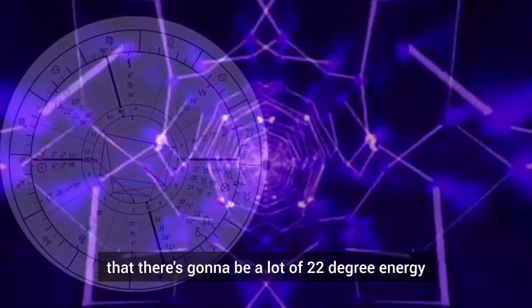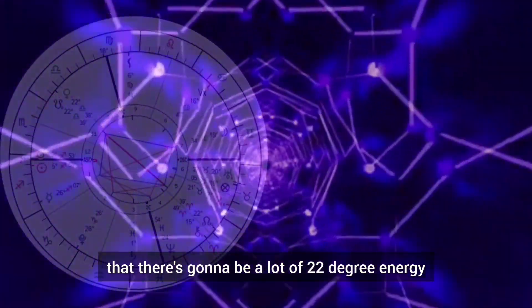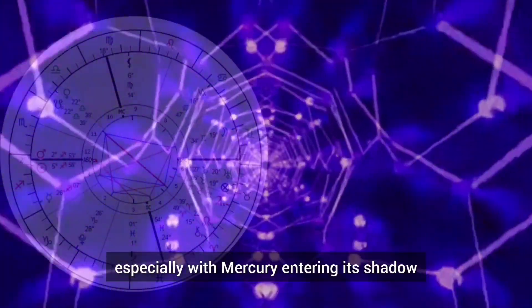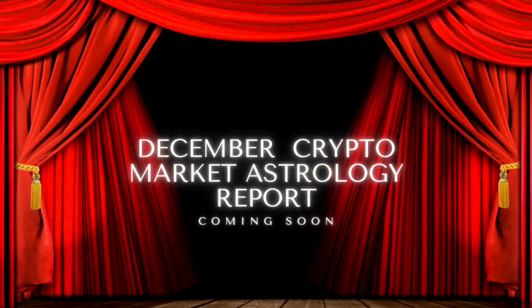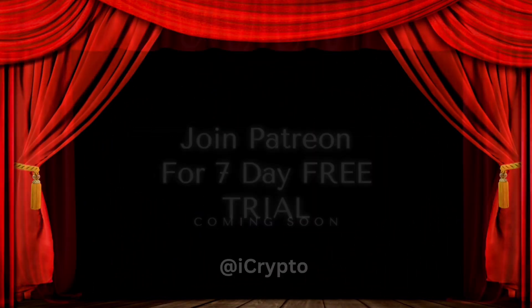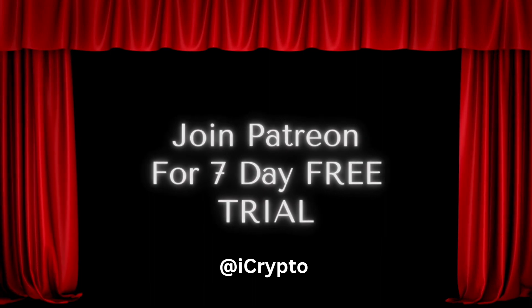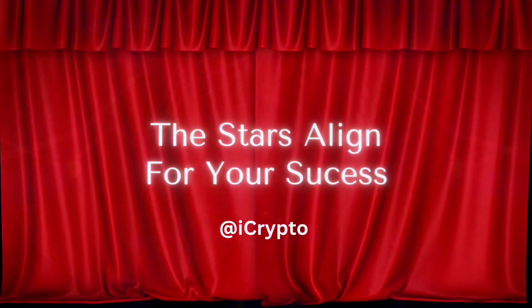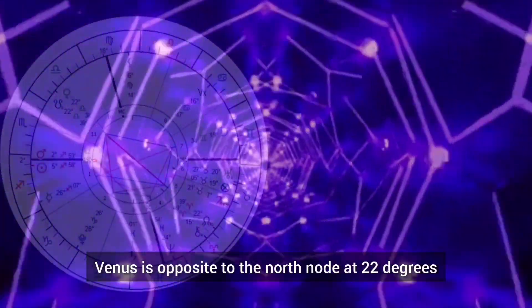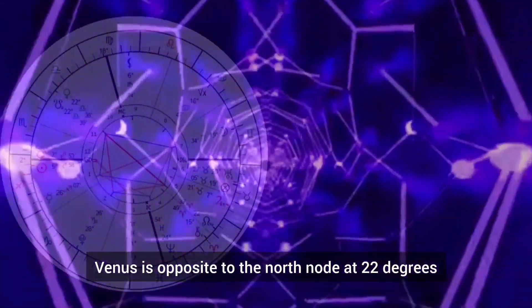We're here in a period where there's going to be a lot of 22 degree energy, especially with Mercury entering its shadow on the 25th at 22 degrees. Now Venus is opposite to the north node at 22 degrees.